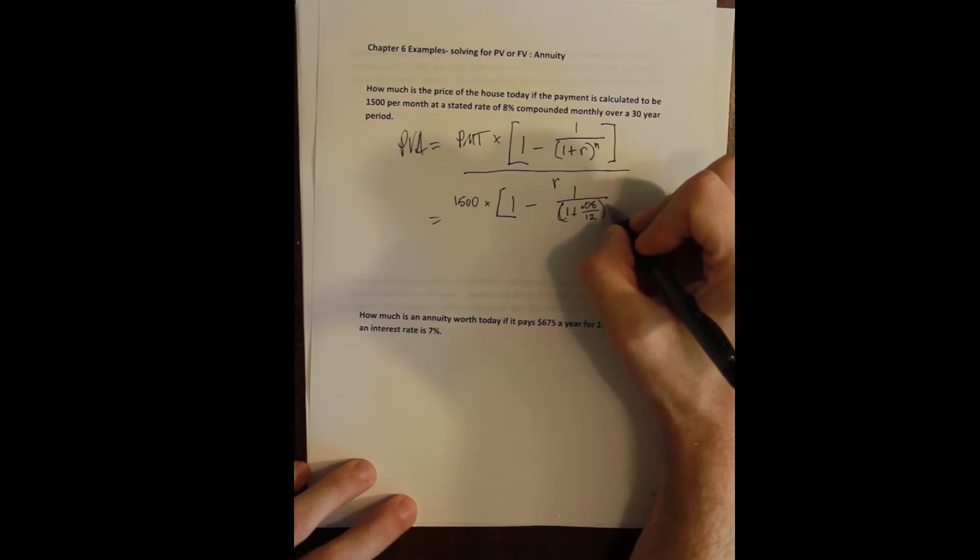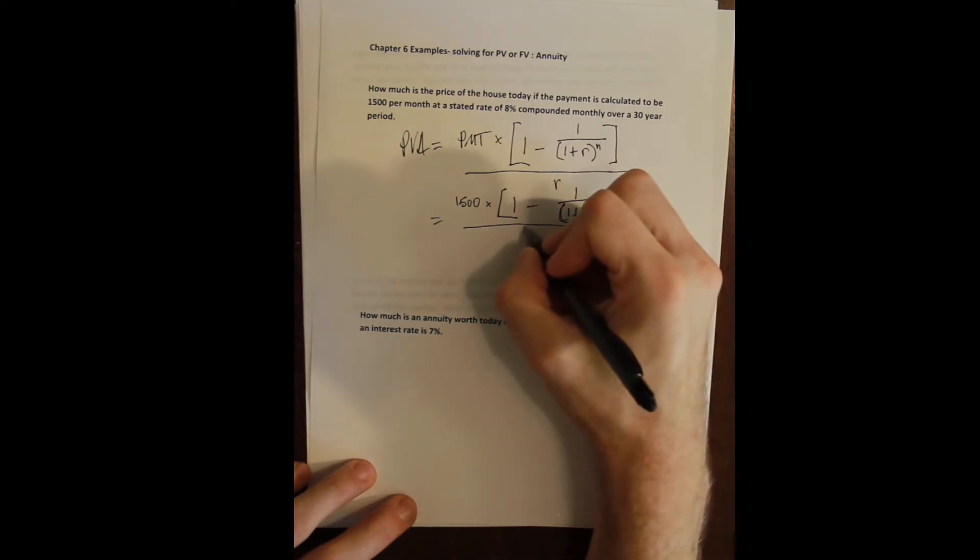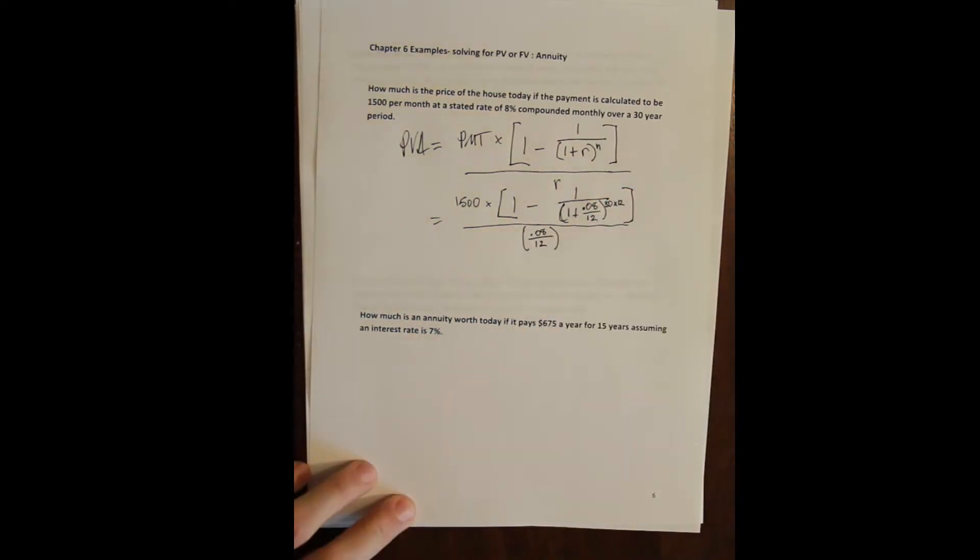Raised to n, which is the number of periods, but we're given 30 years. So to convert 30 years into months, we multiply by 12. And then all of that divided by the monthly rate of 8% divided by 12. Okay.